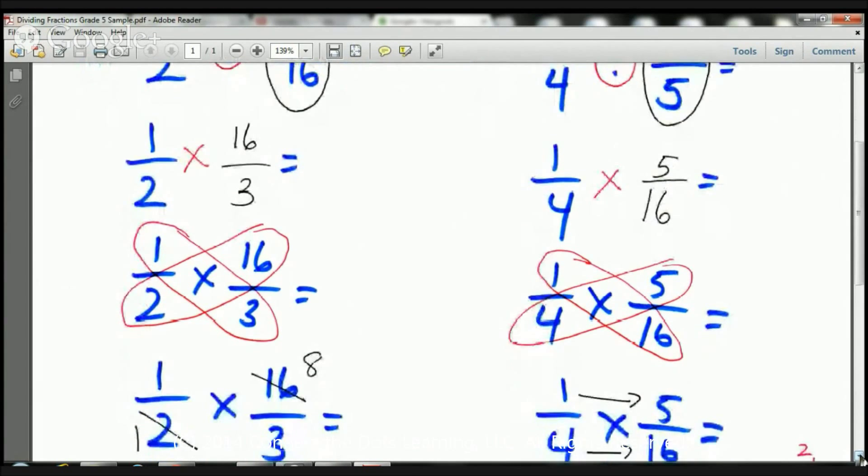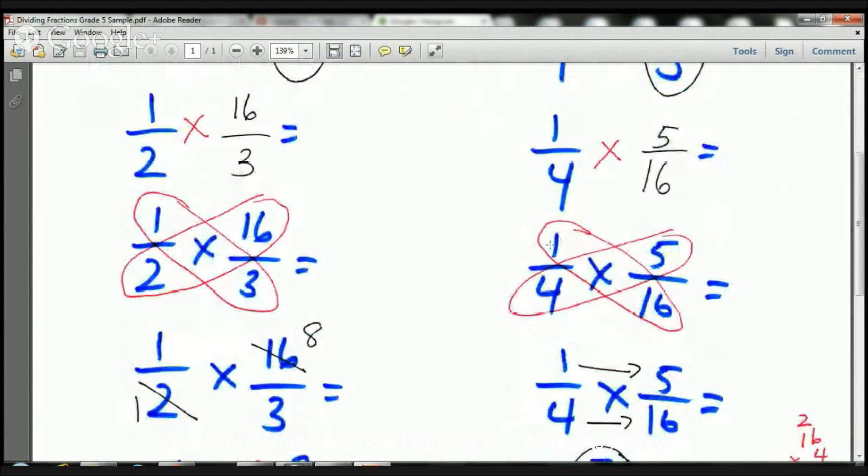My next step is I need to see, can I cross-cancel anything out? Can I cross-cancel the one and the sixteen or the four and the five? Well, the four and the five, they're not multiples of each other, so I can't do anything there. And the one and the sixteen, it'll just go into sixteen times, so I'm not going to do anything with that either.